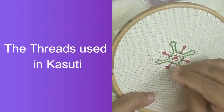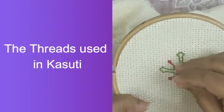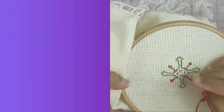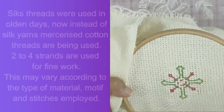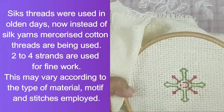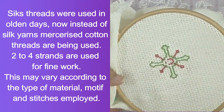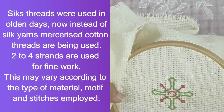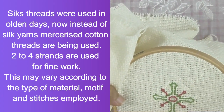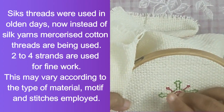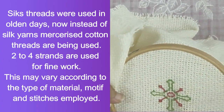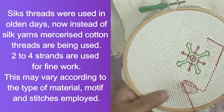Silk threads were used in olden days, but now instead of silk, mercerized cotton threads are being used. Two to four strands are used for fine work, and this may vary according to the type of material, motif, and stitches employed.